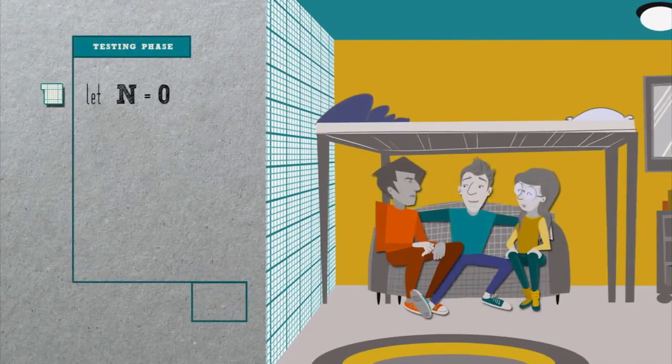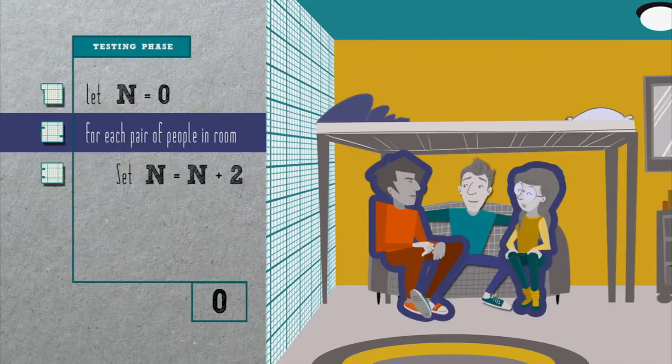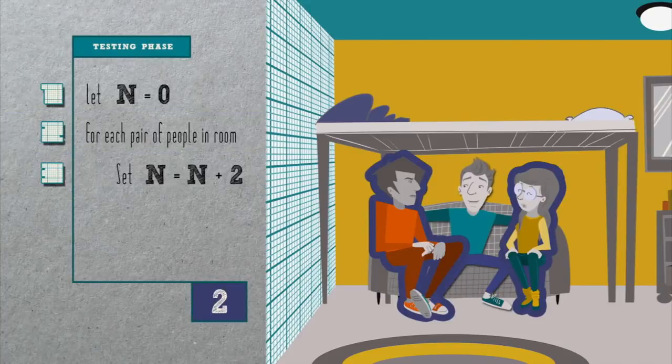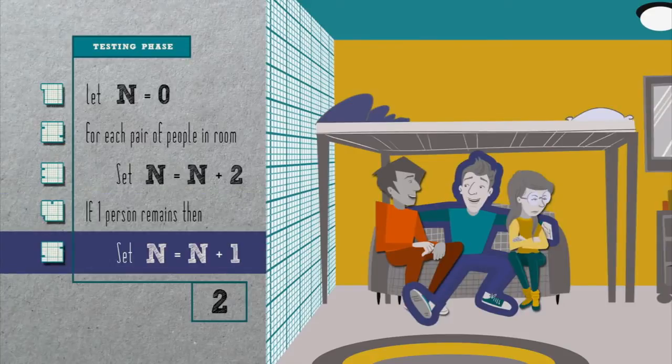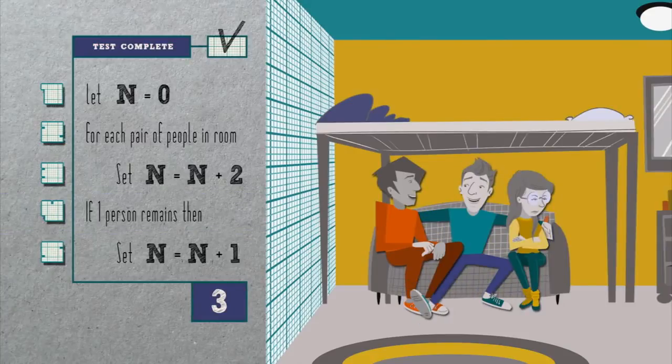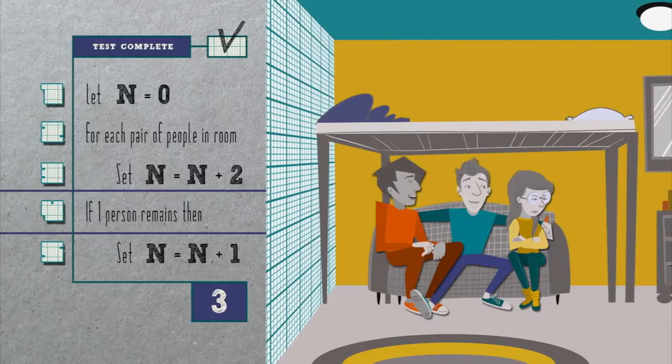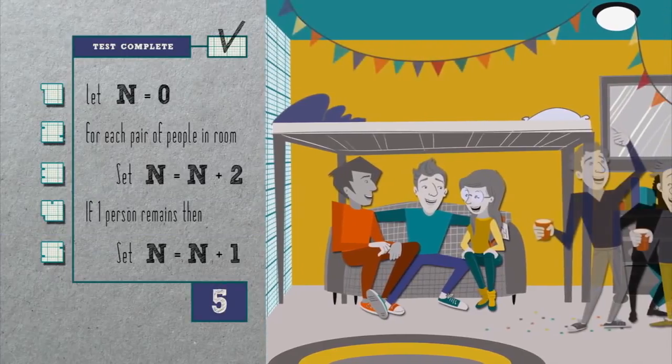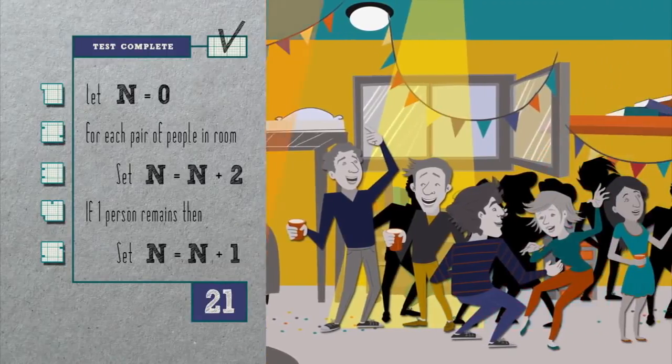Let's redress with some new pseudocode. Let n equal zero. For each pair of people in room, set n equal to n plus two. If one person remains unpaired, set n equal to n plus one. To solve this particular problem, we've introduced in line four a condition, otherwise known as a branch, that only executes if there's one person we could not pair with another. And so now, whether there's one or three or any odd number of people in the room, this algorithm will now count them.